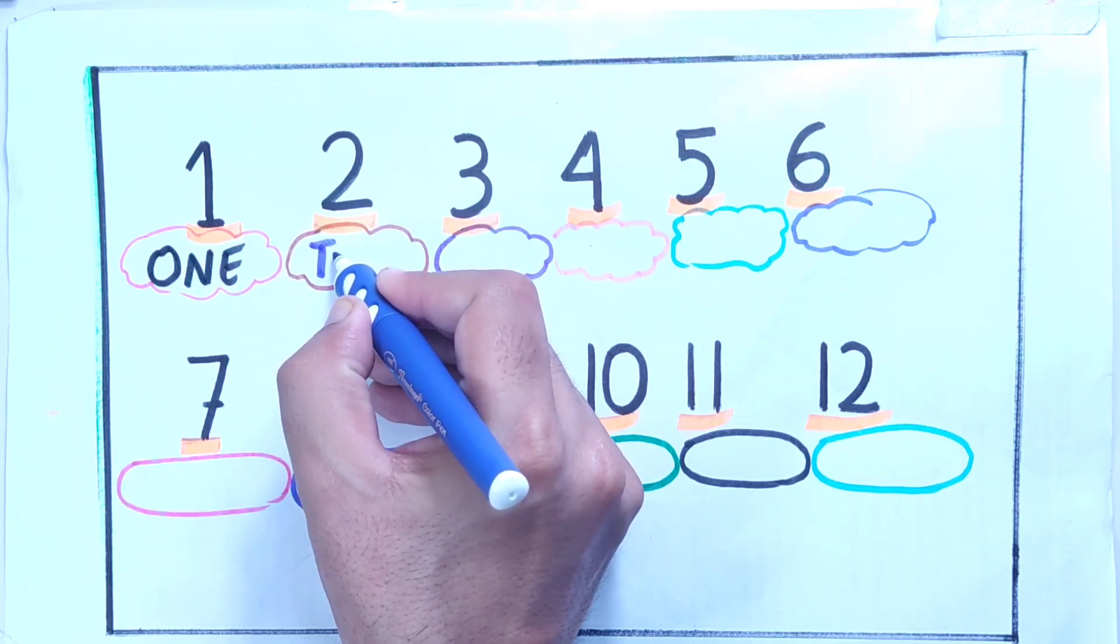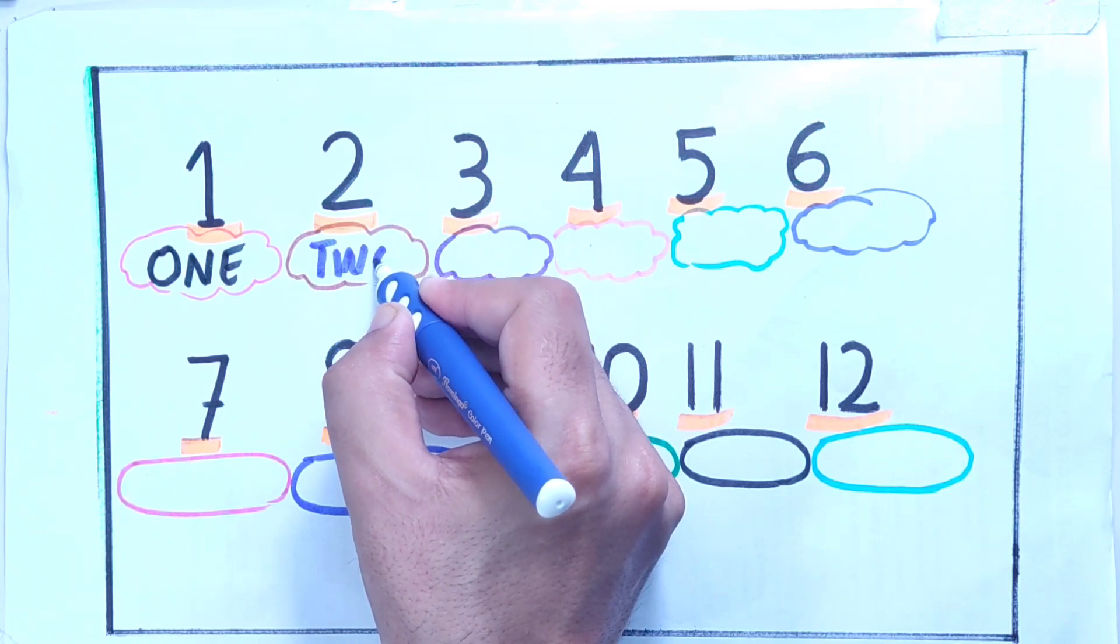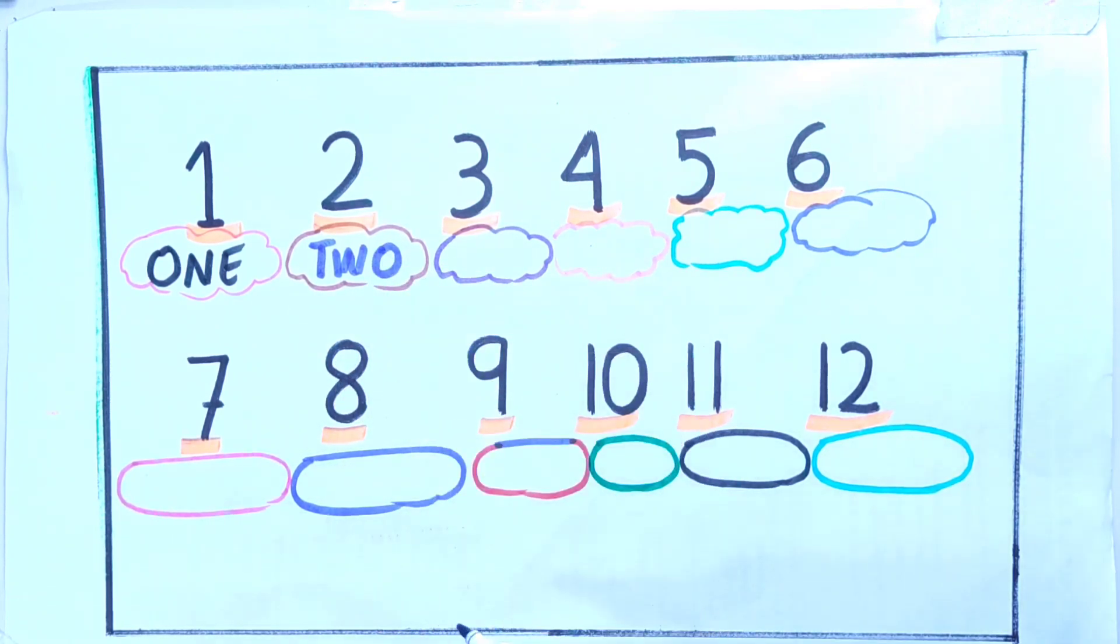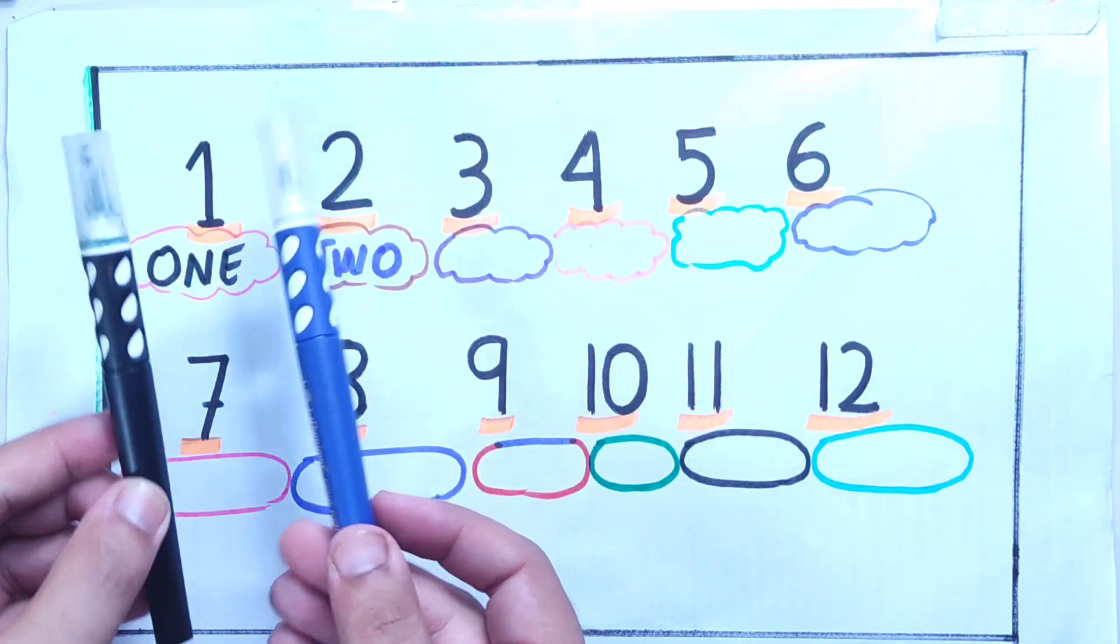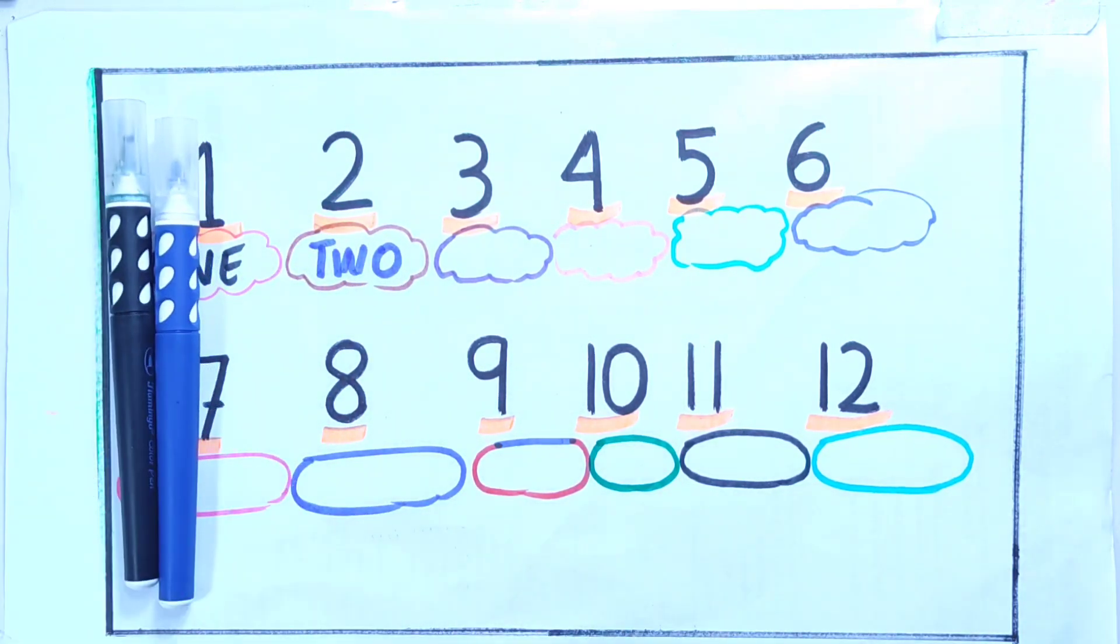And now let us take another color, that is dark blue color. Two: T-W-O, two. So you can see these are two, one, two, so we can understand by this.